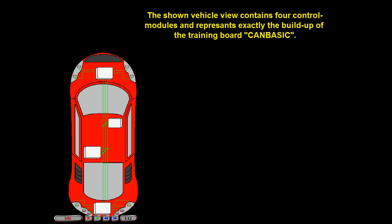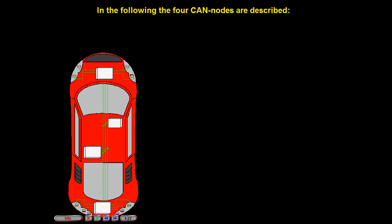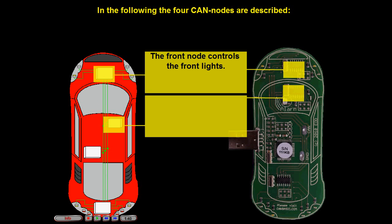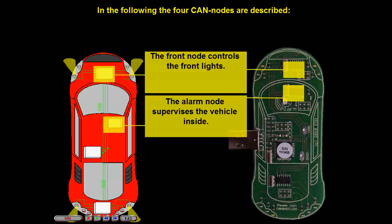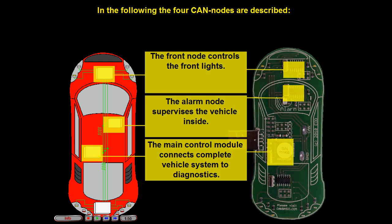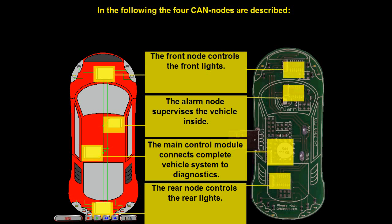The shown vehicle view contains four control modules and represents exactly the build-up of the training board CAN-BASIC. The four CAN nodes are: the front node, which controls the front lights; the alarm node, which supervises the vehicle inside; the main control module, which connects the complete vehicle system to diagnostics; and the rear node, which controls the rear lights.